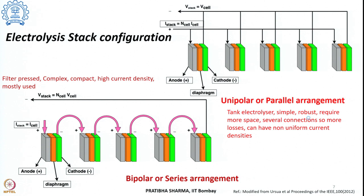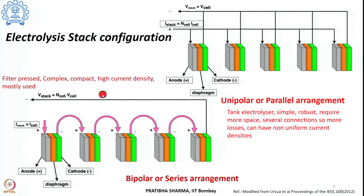The bipolar or series arrangement, also known as filter-press arrangement, connects the negative of one cell to the positive of the next. It is more complex in arrangement but is compact and achieves high current density. This is the most widely used combination. In this arrangement, the voltage of the stack is N_cell times V_cell, while the same current flows through the stack as through the individual cell.